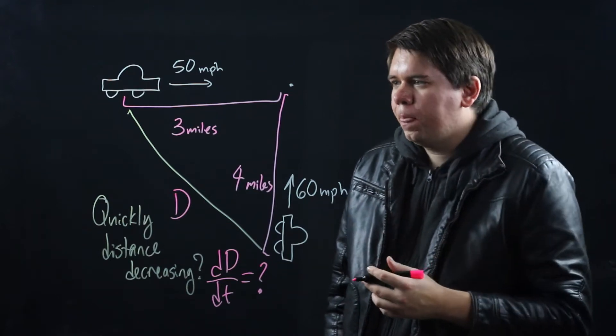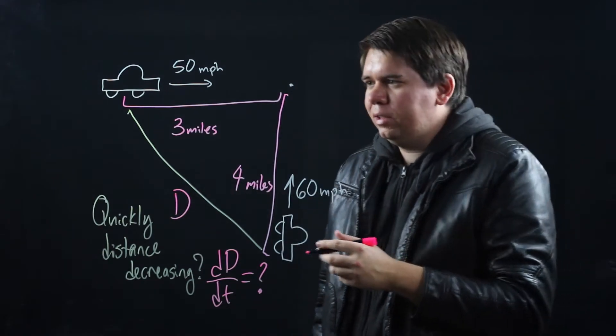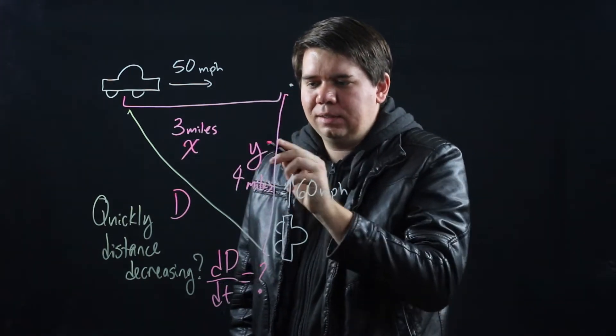Well, what do we know? We know your distance from this point. We know your friend's distance from that point. Let's give those some names. Let's say your distance is x. Let's say your friend's distance is y.